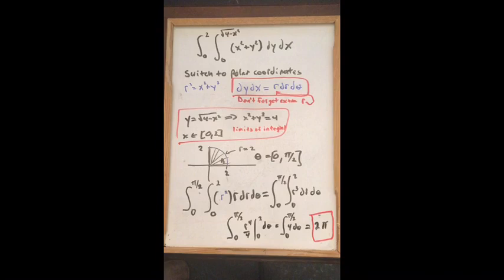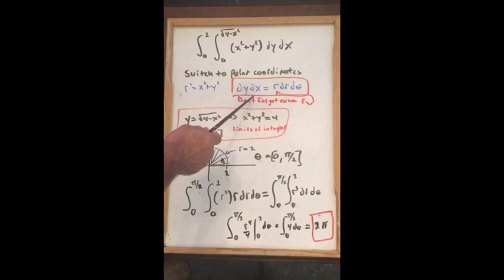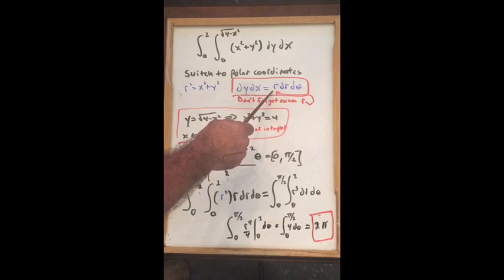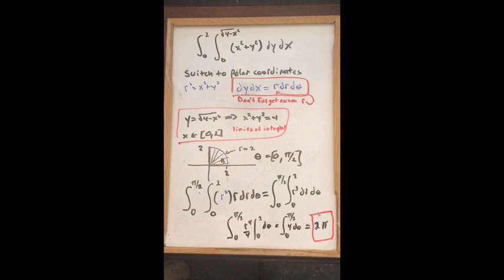We are going to evaluate a double integral in rectangular coordinates by switching it to polar coordinates. R squared equals x squared plus y squared. Also important: dy dx (or dx dy, the order doesn't matter) is always equal to r dr dθ. Notice the extra r — don't forget it, that's a big problem to forget. In polar coordinates, dy dx turns into r dr dθ.